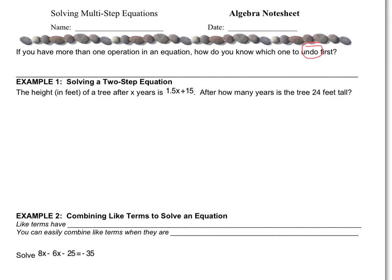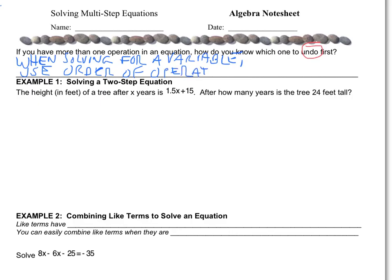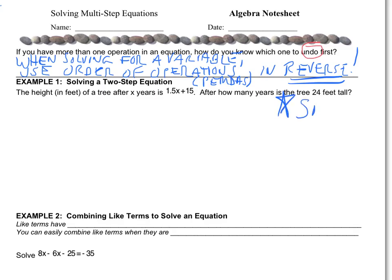How do we know which one to do? When solving for a variable, we use order of operations, which we all refer to as PEMDAS — parentheses, exponents, multiplying, dividing, adding, and subtracting. However, we use them in reverse order. So I refer to this as SADMEP.